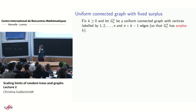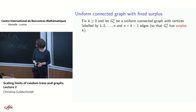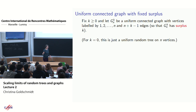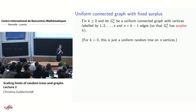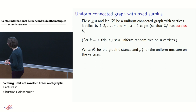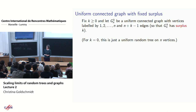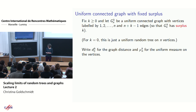Fix k ≥ 0 and let G(n, k) be the uniform connected graph with vertices labeled 1 to n and exactly n + k − 1 edges — that is, surplus k. For k = 0 this is a uniform random labeled tree, which we know is essentially a conditioned Poisson BGW tree, and whose scaling limit is the Brownian CRT. The question is what happens for k ≠ 0.